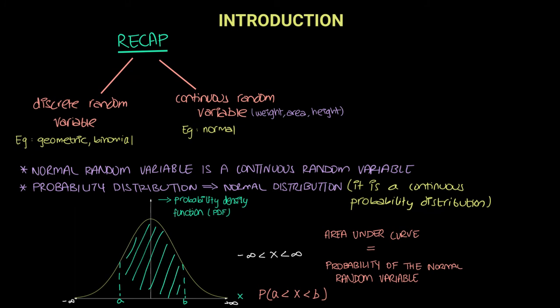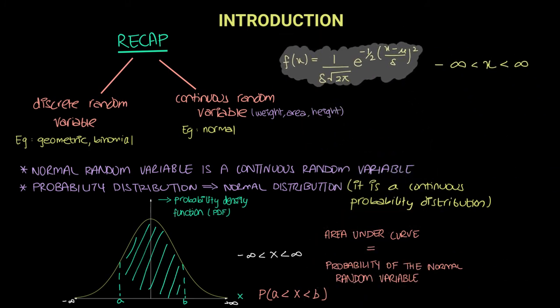How does one find the area under a curve? The standard rule is that we integrate the equation of the curve. The equation of our probability density function is: f(x) = 1 / (σ√(2π)) · e^(−½ · ((x − μ)/σ)²). This is the equation of the curve, and it is quite complex.